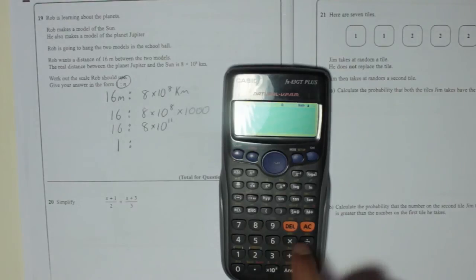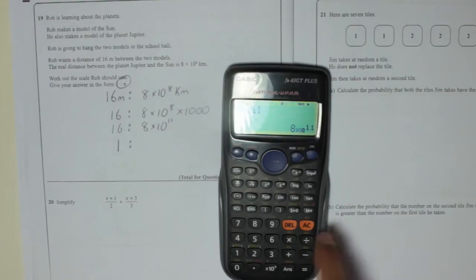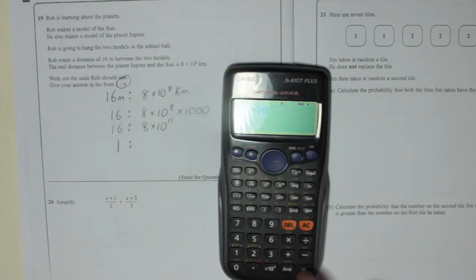So we're going to do 8. There's that button times 10 to the power of x. So times 10 to the power of 11. Is that going to work? Oh yeah, there we go. 8 times 10 to the power of 11. We're going to divide that by 16. Which is 5 times 10 to the power of 10.